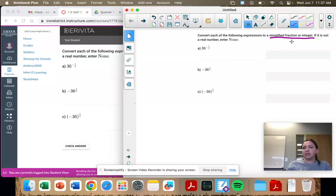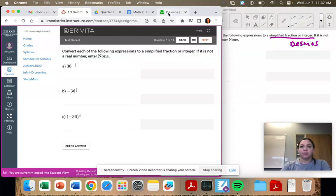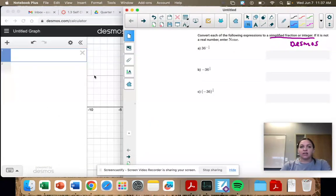So that means we're going to put it in our calculator, Desmos. If it's not a real number, we're going to enter none, and that's when things come up as undefined, when it's not a real number.